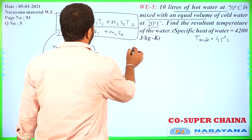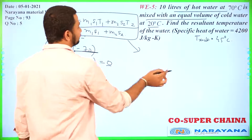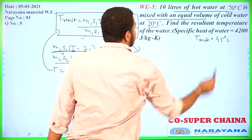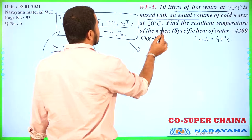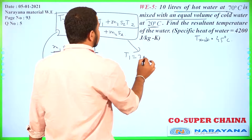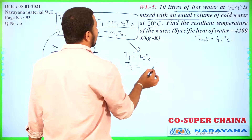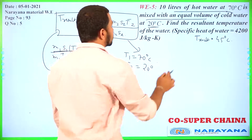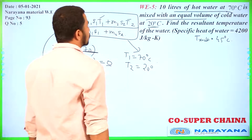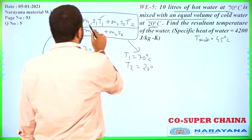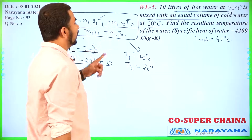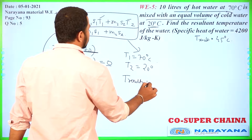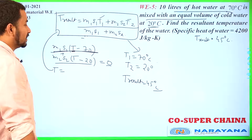This question is pretty simple. Substitute the values: m1s1, t1 is 70 degree Celsius and t2 is 20 degree Celsius. Specific heat of water is given, so s1 and s2 are also given. 10 litre of hot water is mixed with equal volume, so m1 and m2 are both equal. Substituting into the formula gives T resultant as 45 degree Celsius.